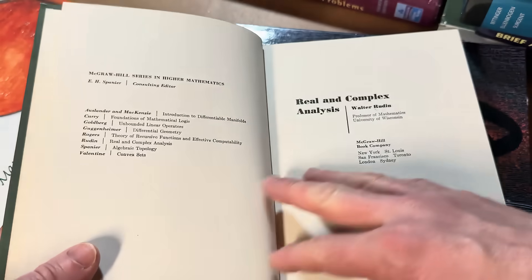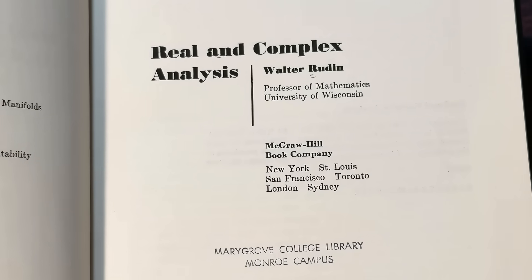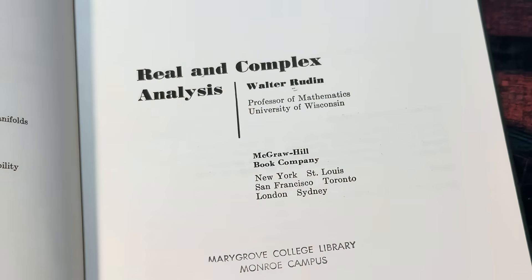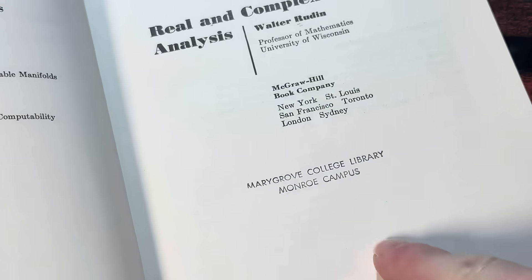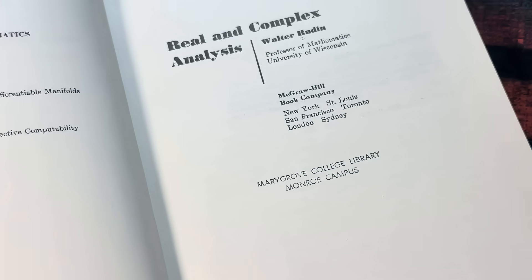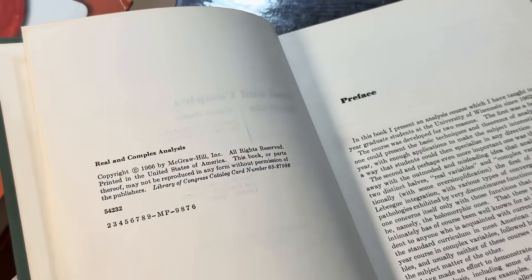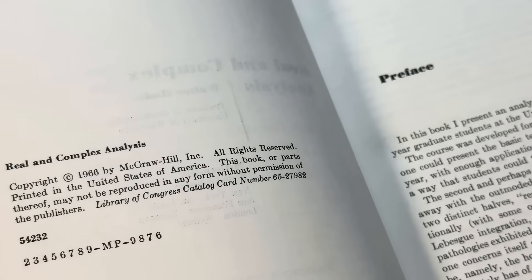This one was from the Marygrove College Library Monroe campus. Real and complex analysis. Walter Rudin, professor of mathematics, University of Wisconsin. There's the stamp again with the Marygrove College Library Monroe campus. Turn the page here and here's the copyright. This is the first edition I believe. 1966.